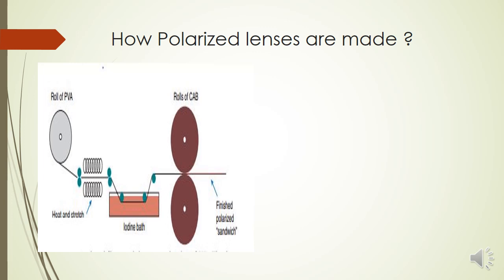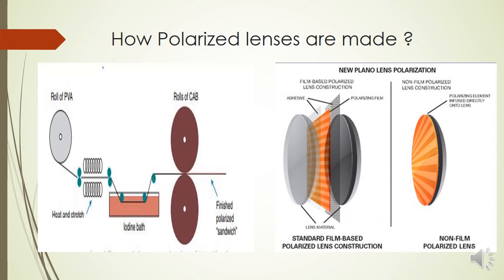When it is heated and went through an iodine bath, these iodine crystals will start getting accumulated onto the long sheets of your PVA in one particular axis of direction. Then once they are having an iodine bath, they are rolled in between two cellulose acetate butyrate sheets. There is a formation of a sandwich kind of lens in which there are two sides with your lenses and in between them there is a polarizing sheet with one particular axis.